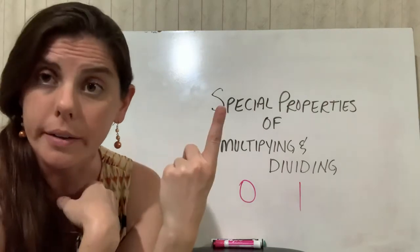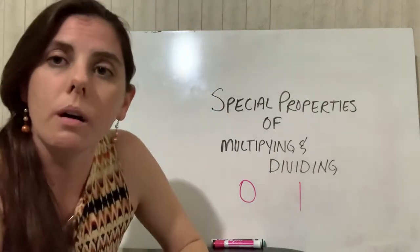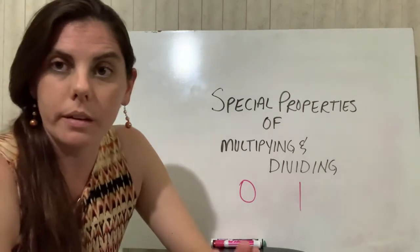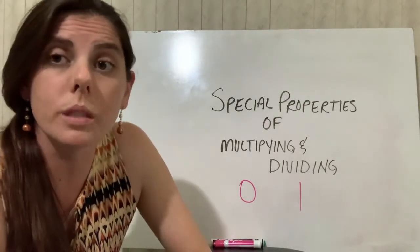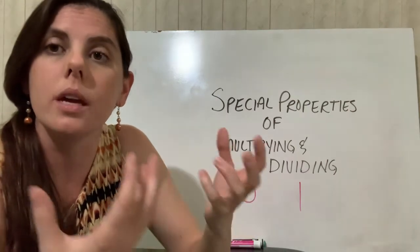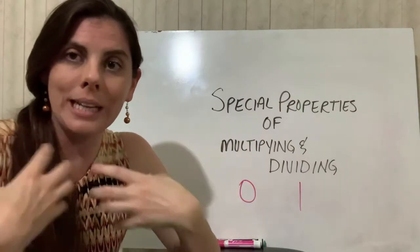The number 1. The number 1 is what we call the identity property. The reason why it's called the identity property is because if you multiply or divide anything by 1, it will equal itself. So it retains its identity.